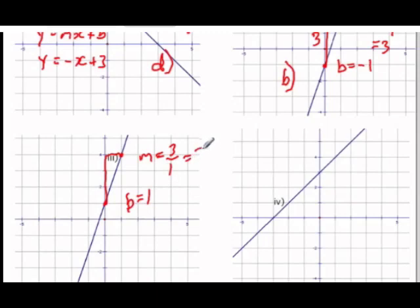So our equation y equals mx plus b will be y equals 3, because that's our m, x plus 1. So that means that this is a, y equals 3x plus 1.